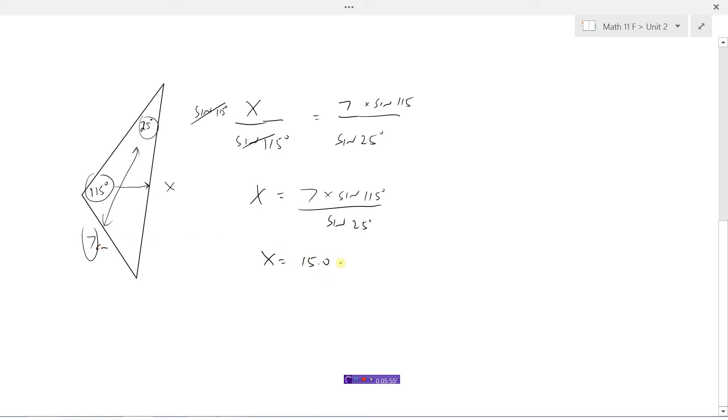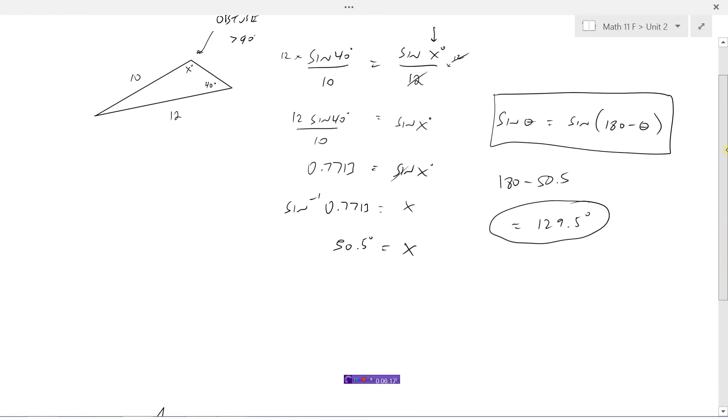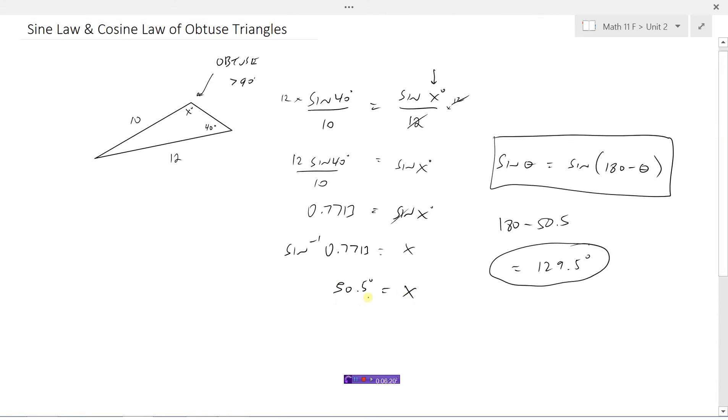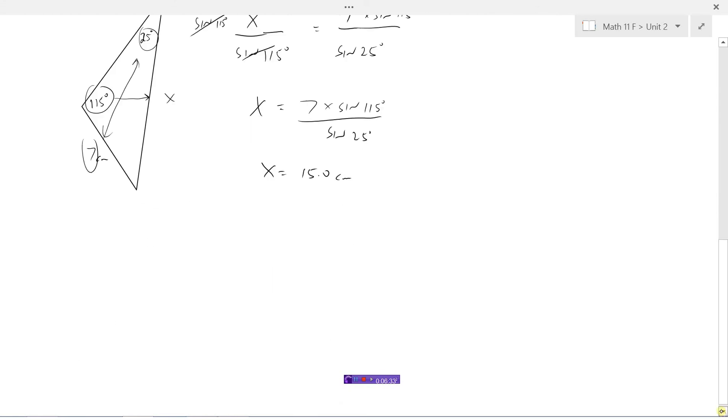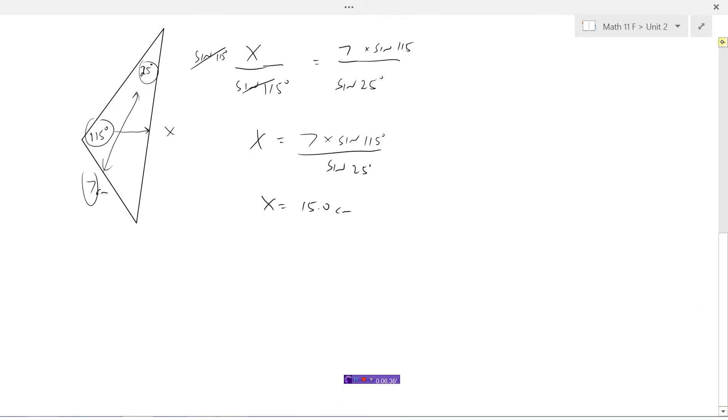Let's say these were centimeters, so we could say side x is 15 centimeters long. So there's no need to have any special provision for dealing with an obtuse angle if we know what the angle is. Sine of 115 will always give us the correct ratio. The only time where we have to worry is when we're solving for the angle. And if the angle is less than 90 degrees and we're looking for one that's more than 90 degrees, then we must take this into consideration. But if we know what the angle is, then we could just work the problem out as we would normally work it out using the sine law.